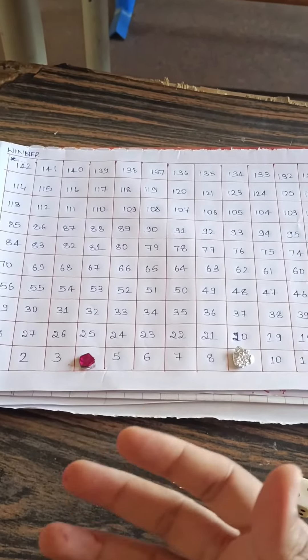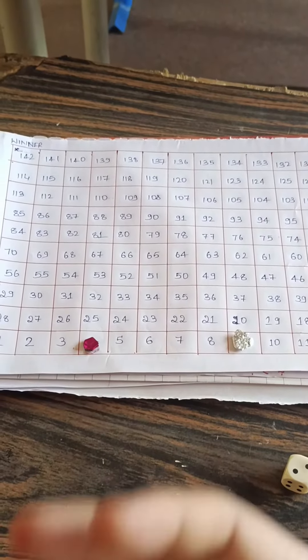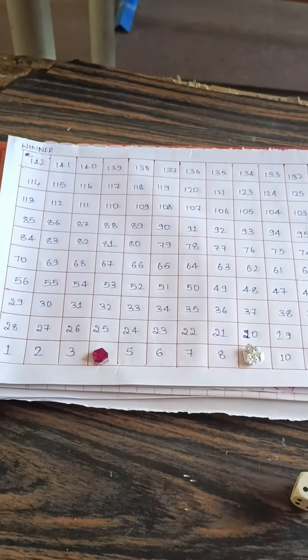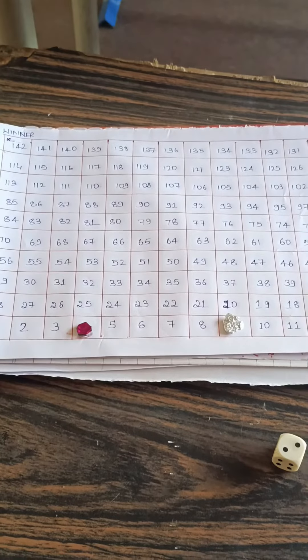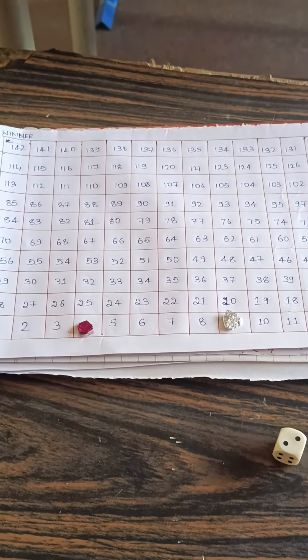A child who finishes up to 142 comes first is the winner, or till the period gets over, whoever is at maximum number, they are the winner.